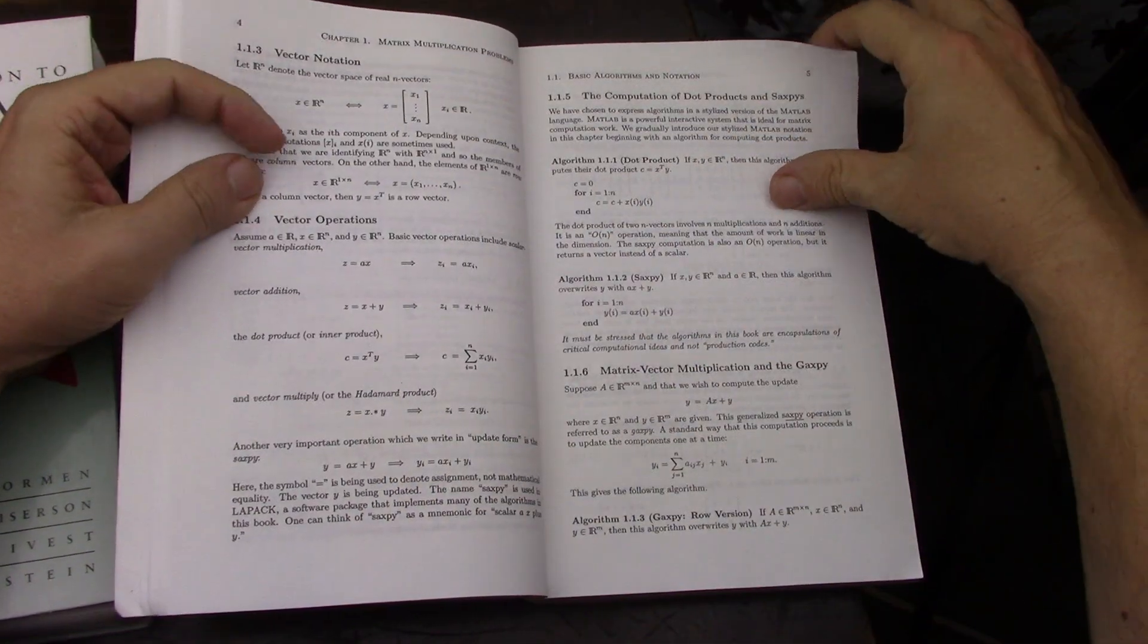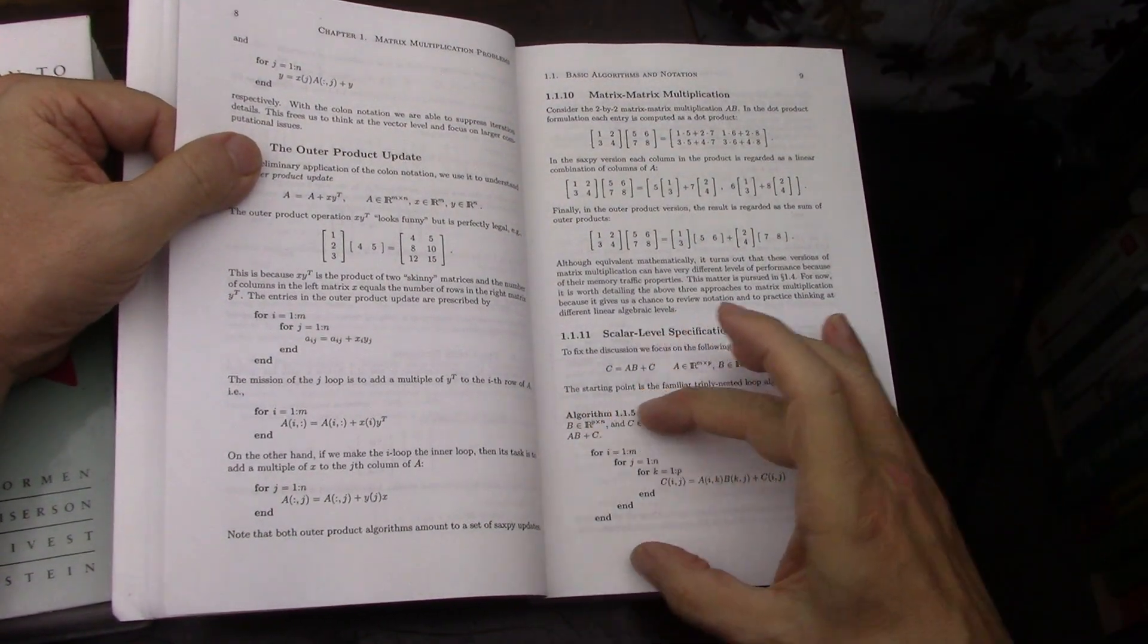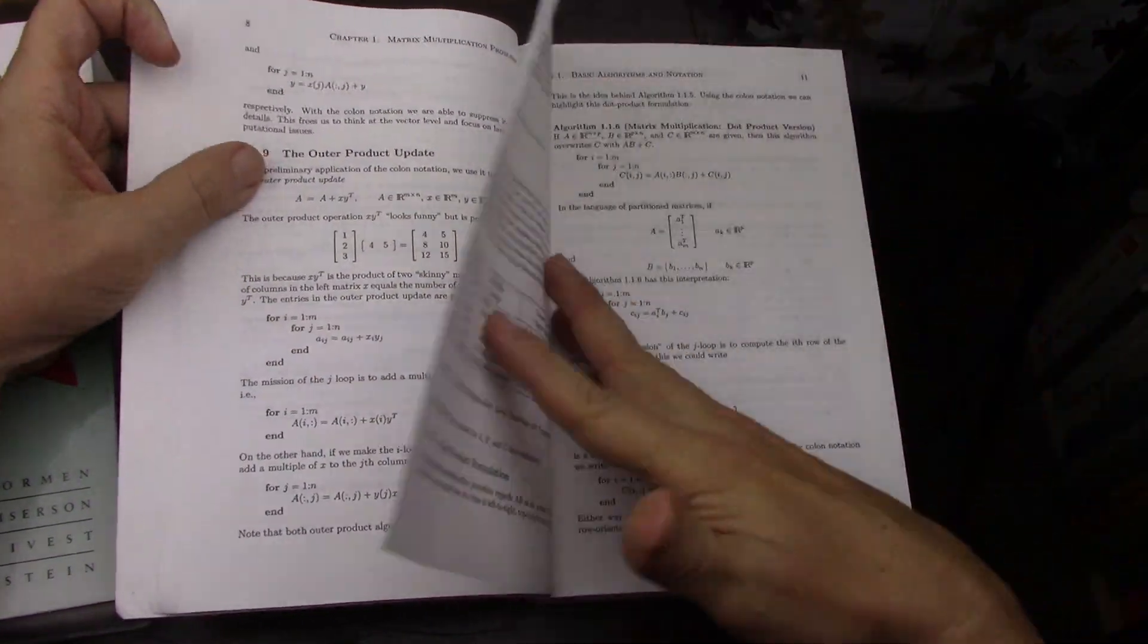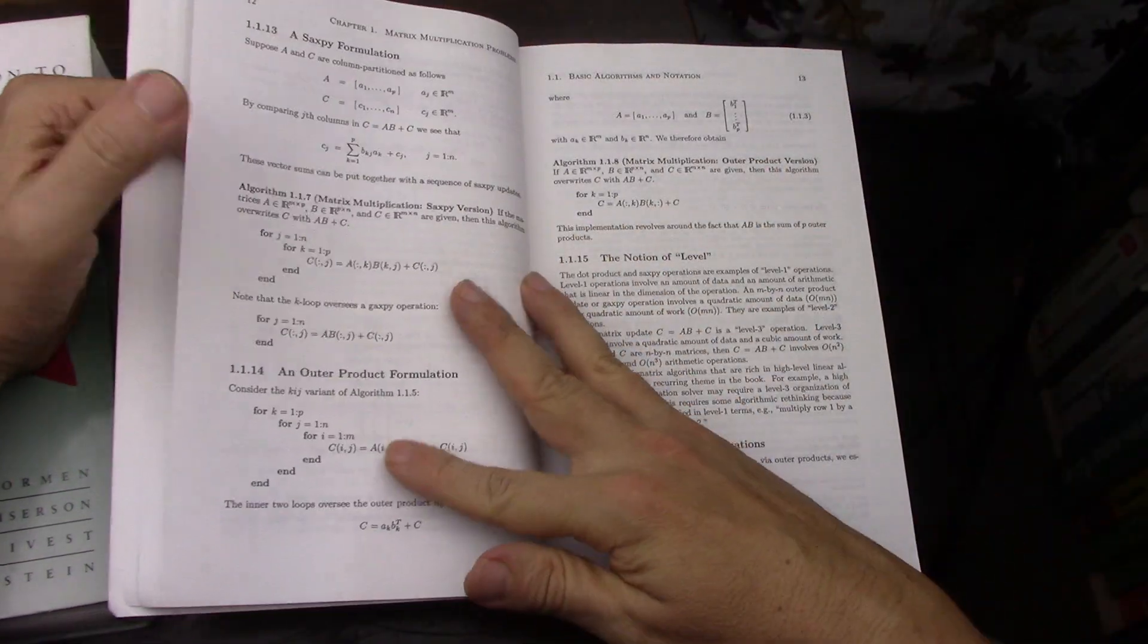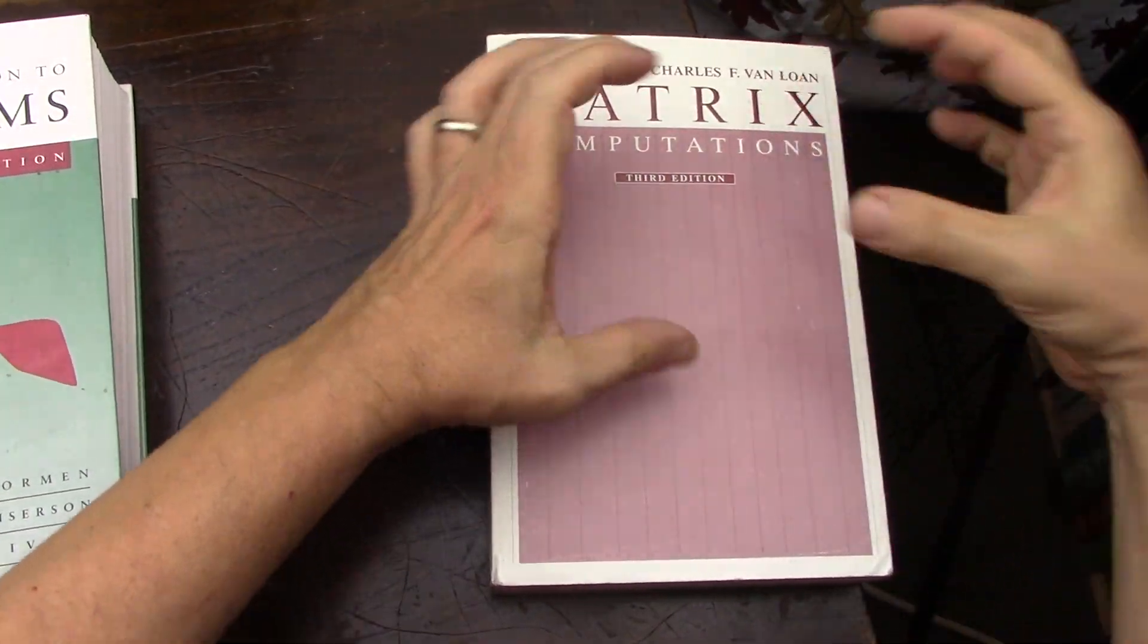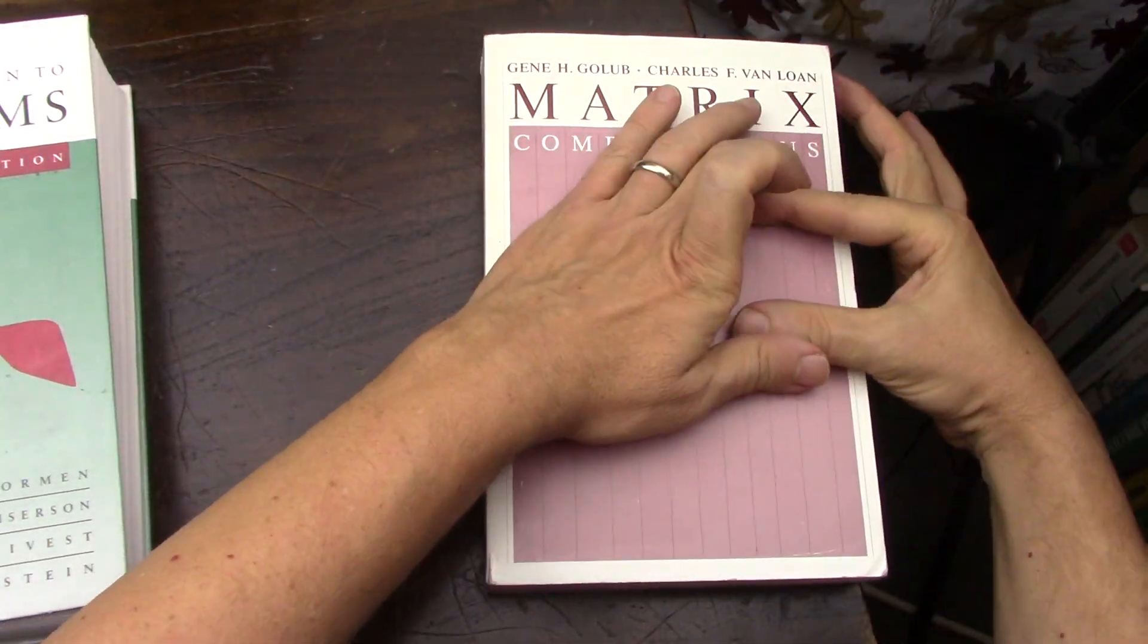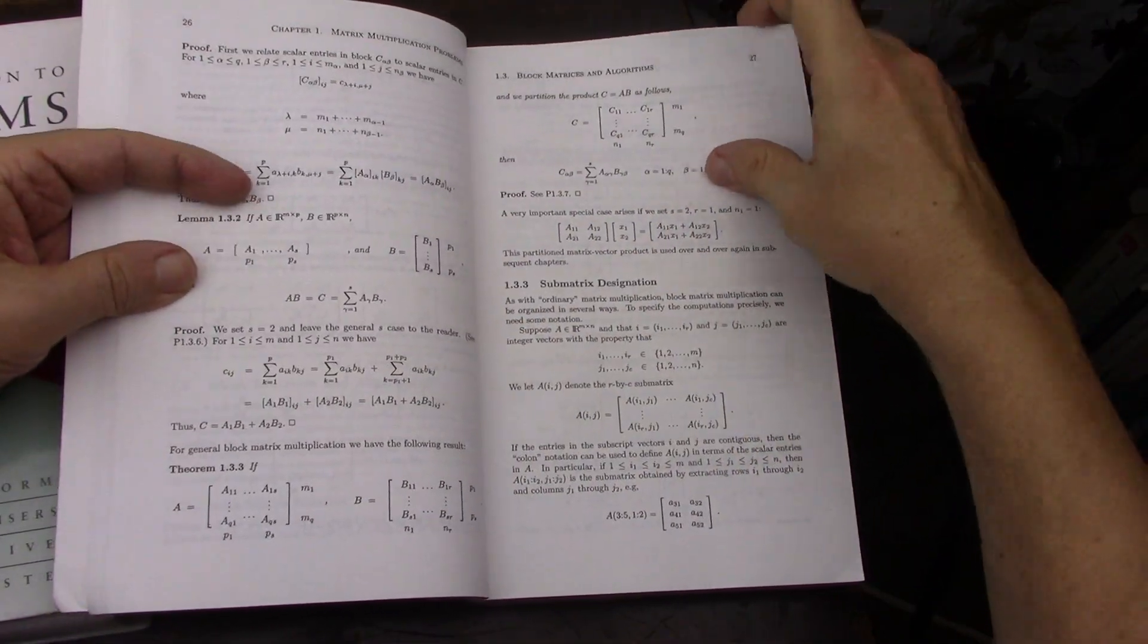When you go into the actual book itself, see how the algorithms are shown in pseudocode, and this is completely independent of any programming language you would ever want to use. That is great. That marks a book to be great because it's not like matrix computation for C++, Fortran, Java, Python, or R. No, it's just here's the algorithm.